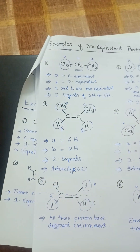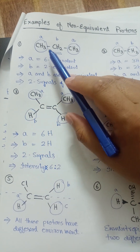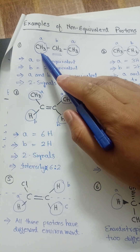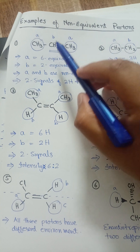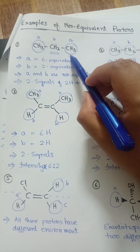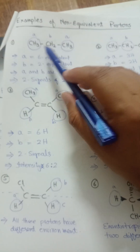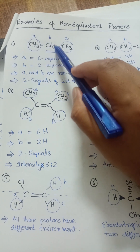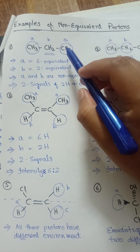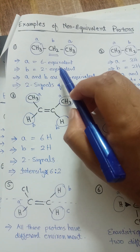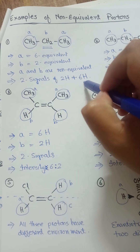Now we will discuss non-equivalent protons with examples. Here is the first example, which is propane. In propane, these three protons of CH₃ and these three protons of the other CH₃ are in the same chemical environment, so they will produce a six-equivalent-proton signal. The CH₂ group protons are different from these six protons, and will produce another signal of two protons. Labeling these as A and B: A gives six equivalent protons and B gives two equivalent protons. Since A and B are non-equivalent, two signals — of six and two protons — will be produced.